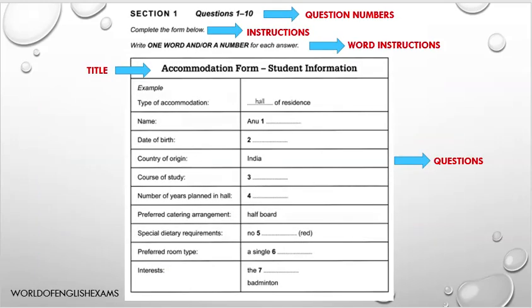This is how a form will look like. This form completion example is taken from Cambridge past papers, mainly from Cambridge Series 9 or Cambridge Book 9. The first segment of the form shows question numbers 1 to 10, and the instructions say 'complete the form below.' In any form you will have common fields such as name, date of birth, country of origin, email address, and telephone numbers. Learning and practicing these basic elements - like listening to phone numbers or names - is very important.